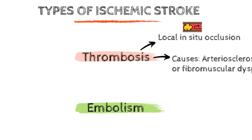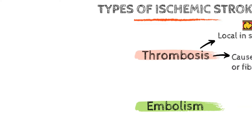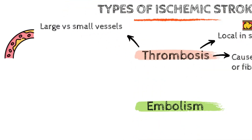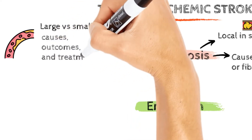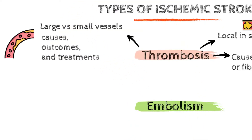Strokes caused by thrombosis may be classified as having either large or small vessels. These two forms of thrombosis are important to differentiate because of their distinct causes, outcomes, and treatments.